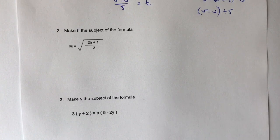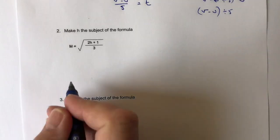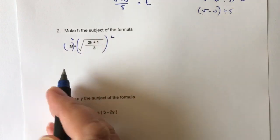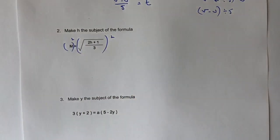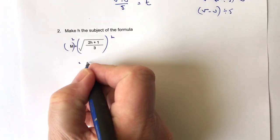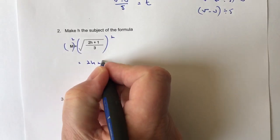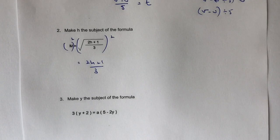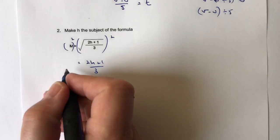So the first thing is we need to get rid of the square root. Now the opposite to a square root is a square, so I'm going to square both sides of the equal sign. If I do that, on the right-hand side, a square and a square root cancel each other out, so I'm just left with 2h plus 1 over 3, and on the left-hand side, I've got m squared.